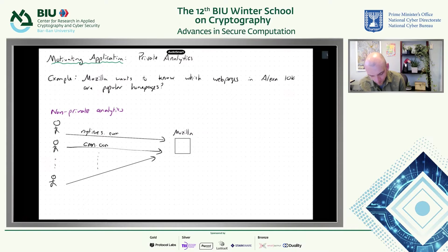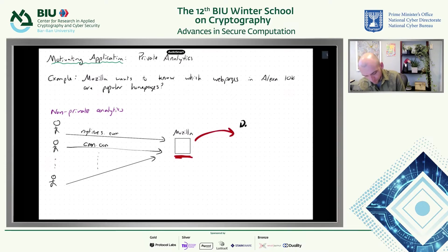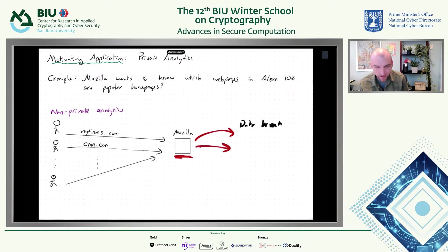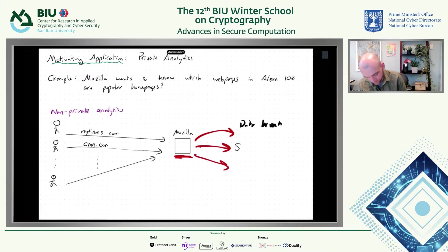From a privacy perspective, this is problematic because Mozilla is now a single point of privacy failure. The data can get stolen in a data breach, there could be some mass surveillance program that convinces Mozilla to turn over the data, or Mozilla could decide to resell it — surveillance, resale, using your data in a way you didn't want.